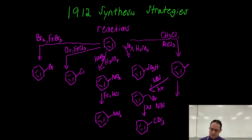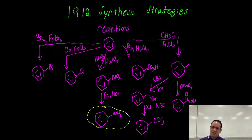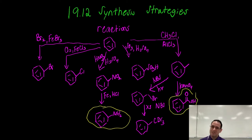Toluene can also be oxidized. We use potassium permanganate — KMnO4 — and that can give you benzoic acid. To synthesize aniline from benzene takes two reactions. To synthesize benzoic acid from benzene takes two reactions. Please keep that in mind.